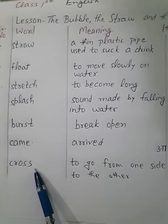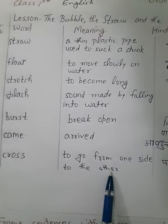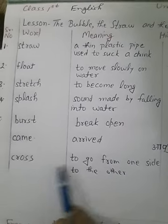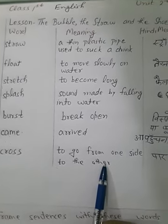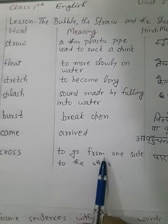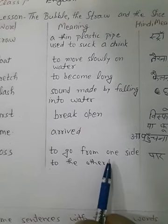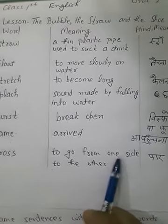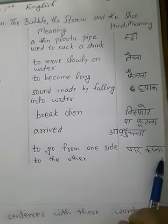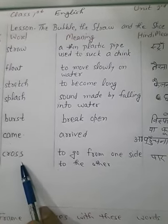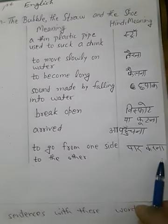Number seven is 'cross.' C-R-O-S-S. Cross means to go from one side to the other. Nadi ke ek kinare se doosre kinare tak jaana — par karna. To go from one side to the other is called cross — par karna.